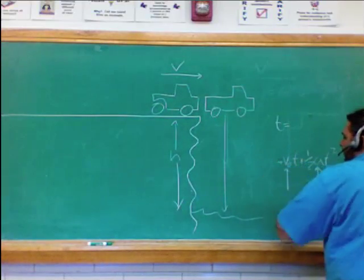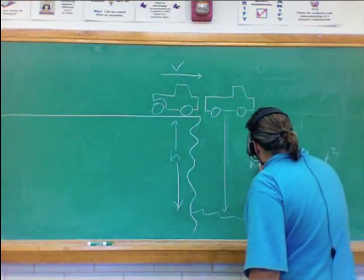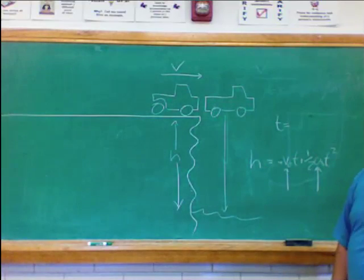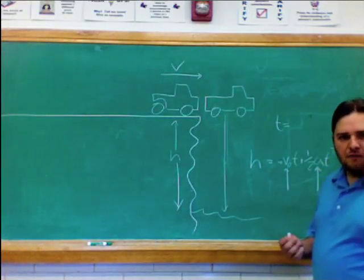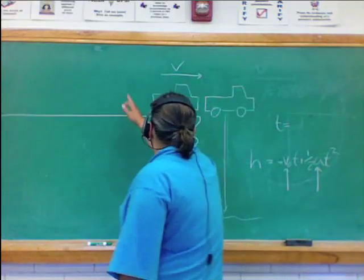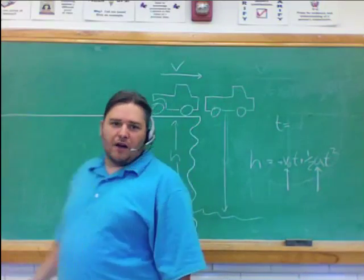I'm going to say that the height is equal to v naught t, plus one-half at squared. And now, looking at the initial velocity, that v naught, remember, is referring to initial velocity. The initial velocity in the y direction.